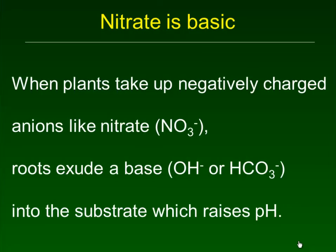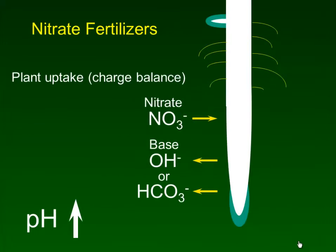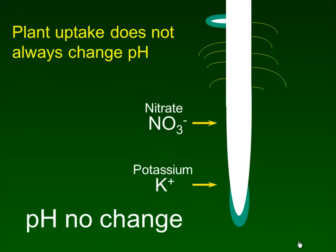In contrast, nitrate is basic. When plants take up a negatively charged anion like nitrate (NO3-), the roots put out a base — OH- or a bicarbonate HCO3- — into the substrate, which raises pH. So NO3- gets taken up by the root, and the root, for charge balance reasons, puts out a base and pH goes up.